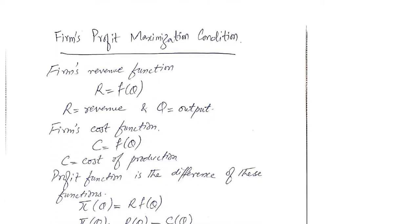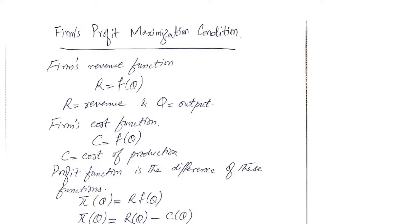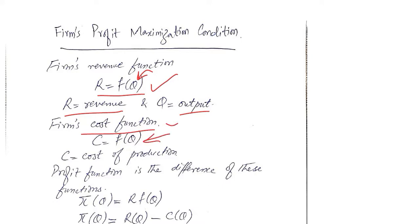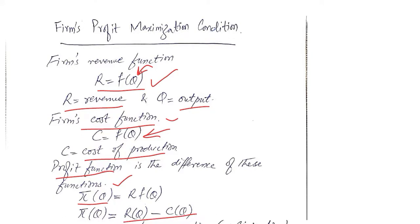Let's consider a situation in which we are given a revenue function of a firm in symbolic terms. We are not dealing with any numerical example — we are talking about symbolic functions. The revenue function is based upon Q, which is the output of the firm, and we are also given the cost function which is dependent upon Q. These two functions are used to develop the profit function, which is revenue minus cost.